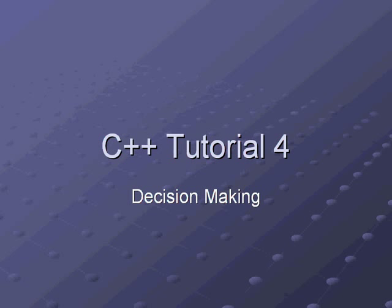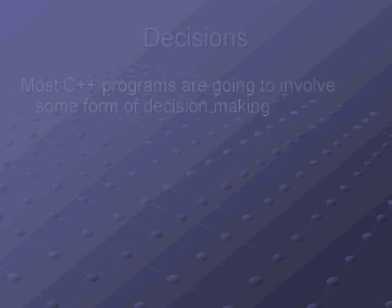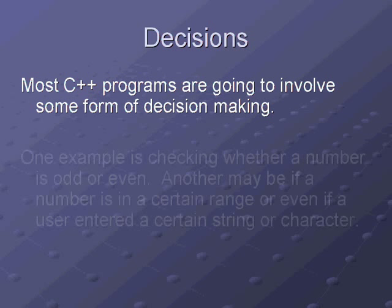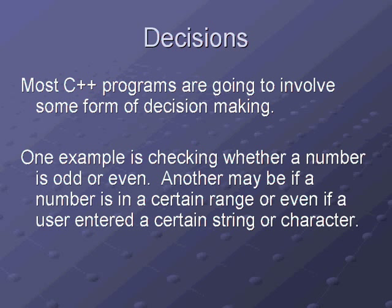Okay, this is the fourth tutorial on decision-making. Most C++ programs are going to involve some form of decision-making. One example might be checking whether a number is odd or even, another may be if a number is in a certain range, or even if a user has entered a certain string or character.